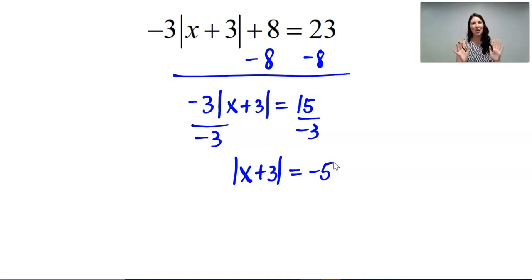Alright, my alarms are going off and this is why. I get an absolute value that's equal to a negative number. However, my alarms are going off because I can't say that the expression x plus 3 is negative 5 units away from 0.